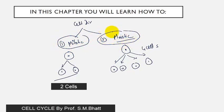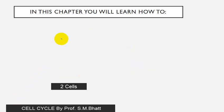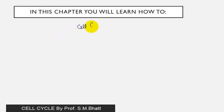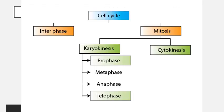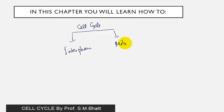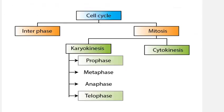The biggest question is how a cell starts dividing and reaches the mitotic phase. The cell cycle can be divided into two phases: the first is interphase, and the second is the mitotic phase.